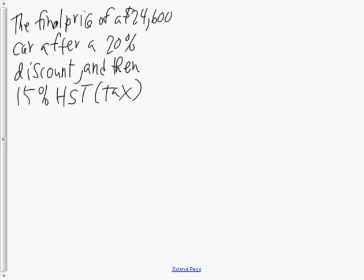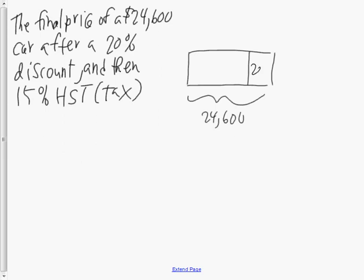The first question is a percentage question. It says: find the final price of a $24,600 car after a 20% discount and then 15% tax. If we think about this car price as being $24,600 — that square representing the full price — and we have a 20% discount, we are going to pay for 80% of the car.